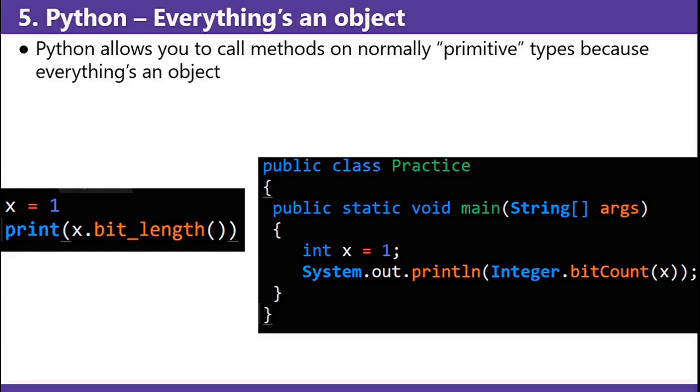Python allows you to call methods on normally primitive types because everything's an object. You don't even have to know what wrapper types are. You can just do x.bit_length and get that one as a bit length of the one.